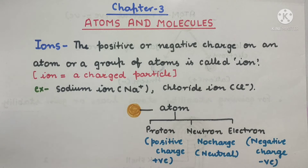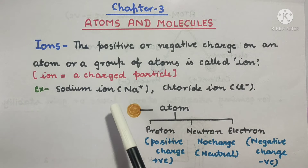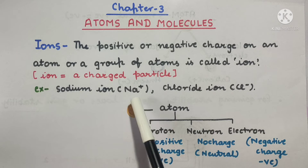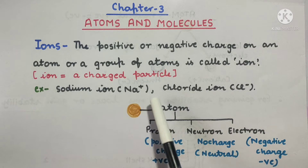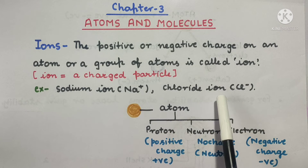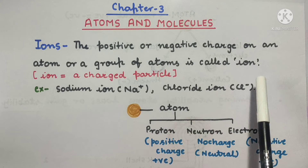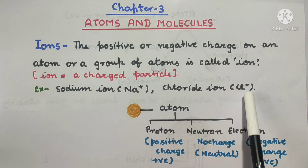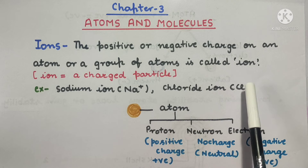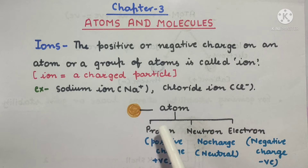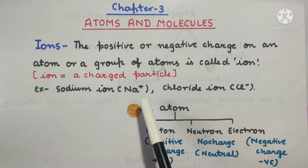What is an ion? For example, a sodium ion carries a positive charge — we write it as Na+. A chloride ion carries a negative charge — we write it as Cl-.